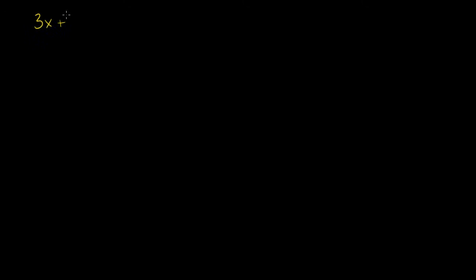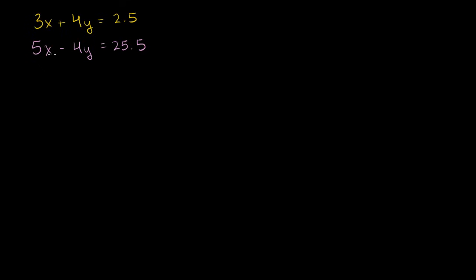Let's explore a few more methods for solving systems of equations. Say we have the equation 3x plus 4y equals 2.5, and another equation 5x minus 4y equals 25.5. We want to find an x and y value that satisfies both equations. Graphically, this would be the intersection of the lines representing the solution sets of both equations. So how can we proceed?